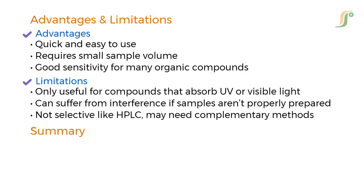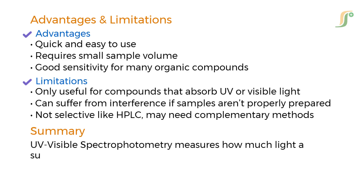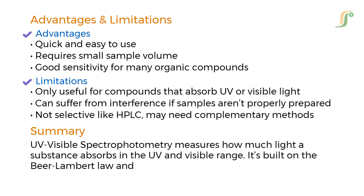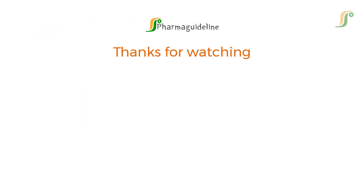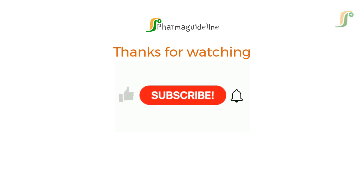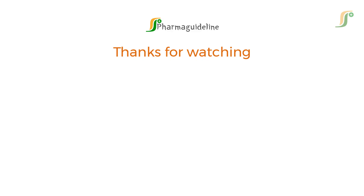To recap: UV-visible spectrophotometry measures how much light a substance absorbs in the UV and visible range. It is built on the Beer-Lambert law and is widely used in pharma for quality control, method validation, and stability studies. Thanks for watching this video. Don't forget to subscribe to this channel to get regular updates, and join channel membership to access exclusive content like courses and member-specific videos.